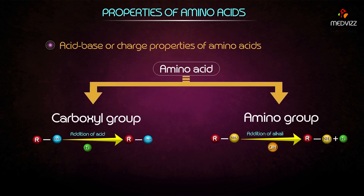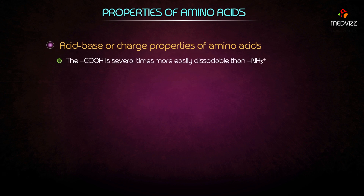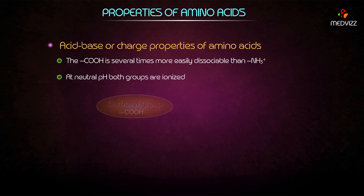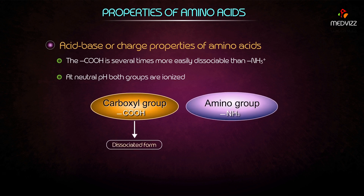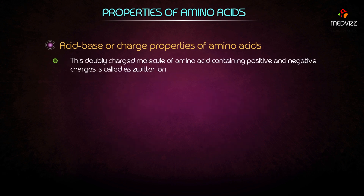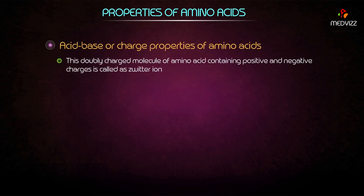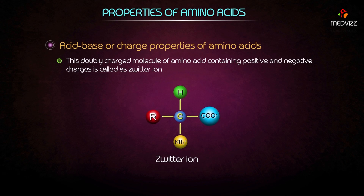Amino acids have two ionizable groups. The –COOH group is several times more easily dissociable than the –NH₃⁺ group. At neutral pH, both groups are ionized: the carboxyl group exists in the dissociated form while the amino group exists in the associated form. This doubly charged molecule containing positive and negative charges is called a zwitterion.